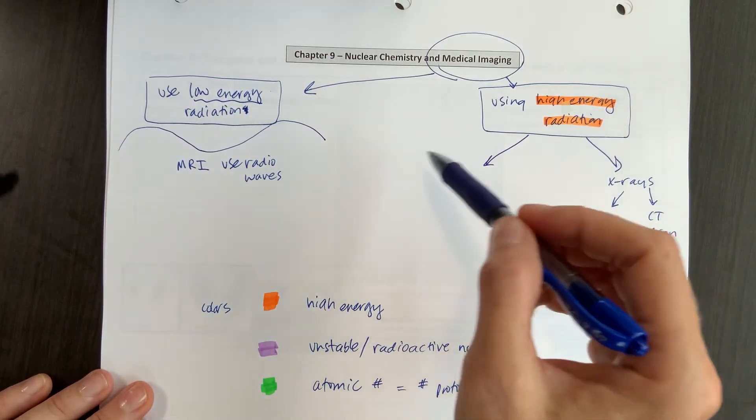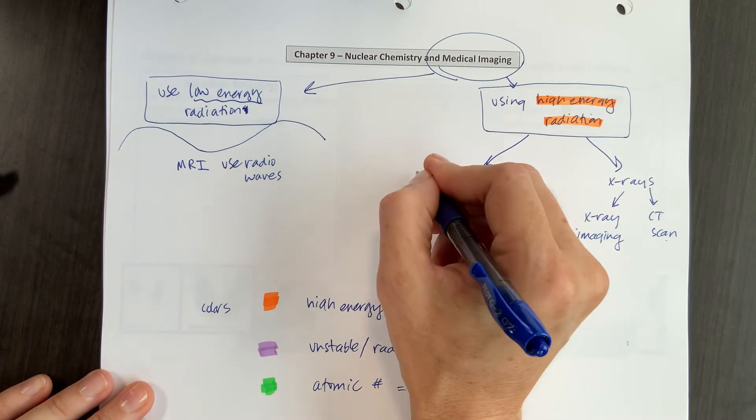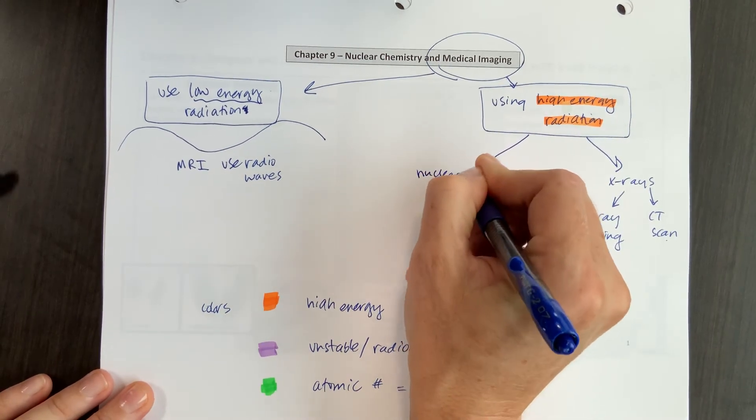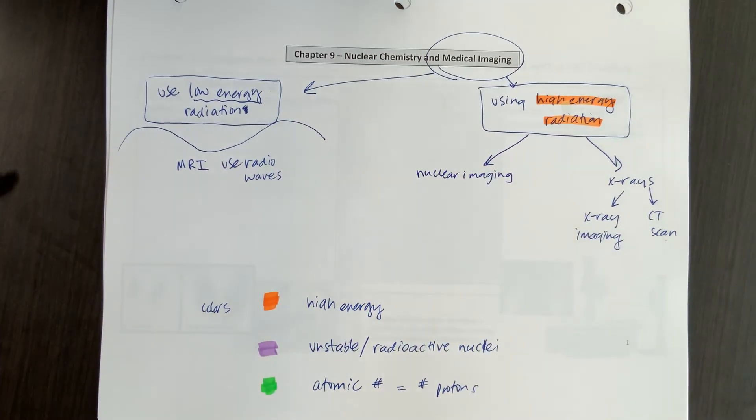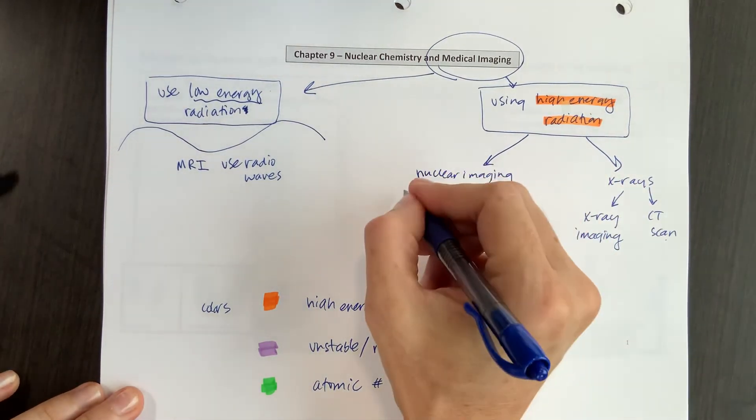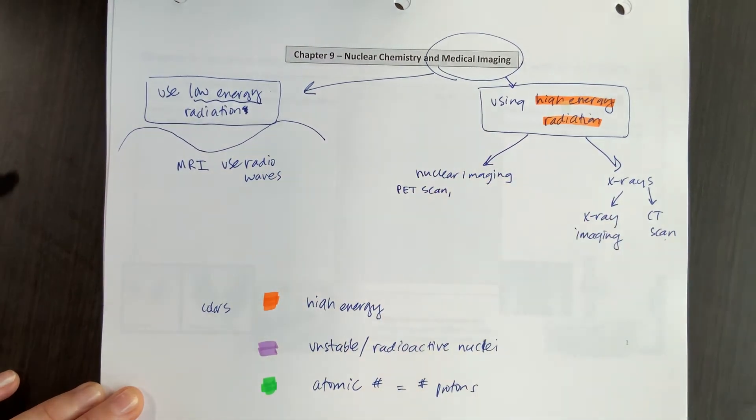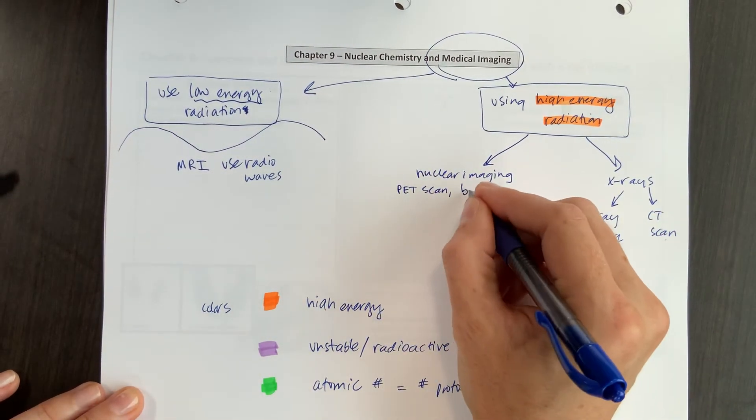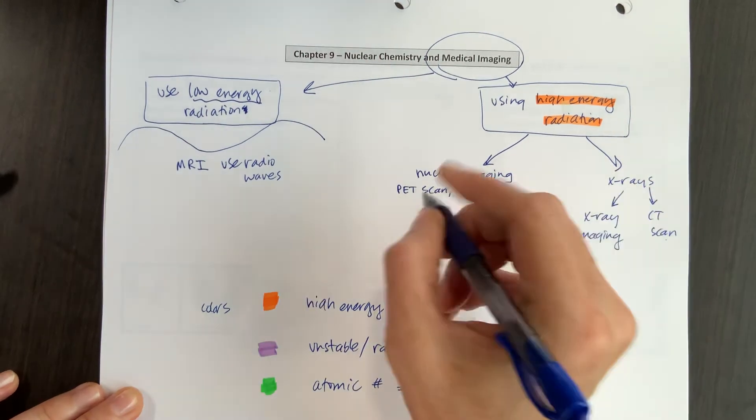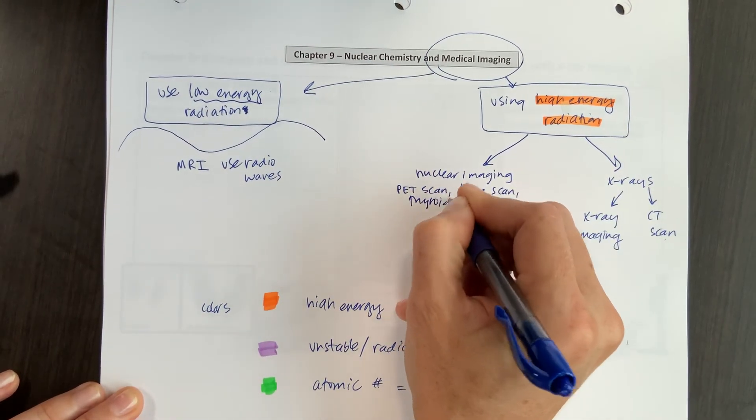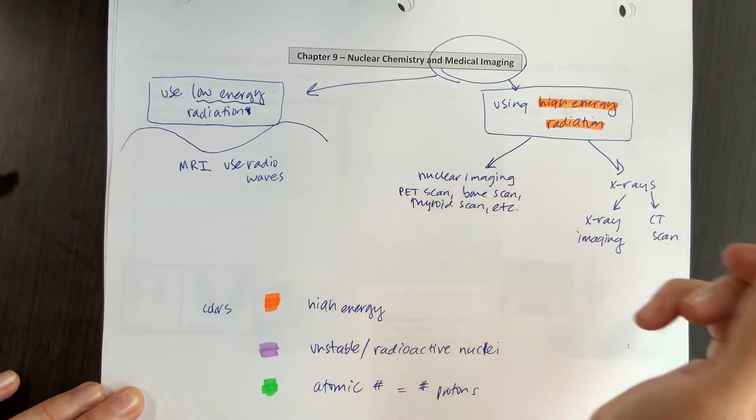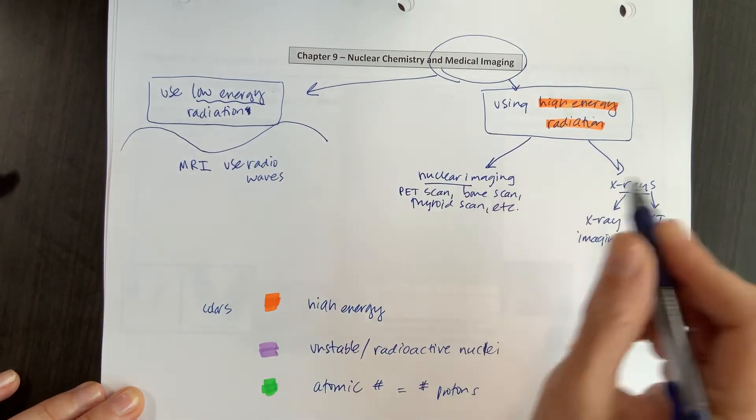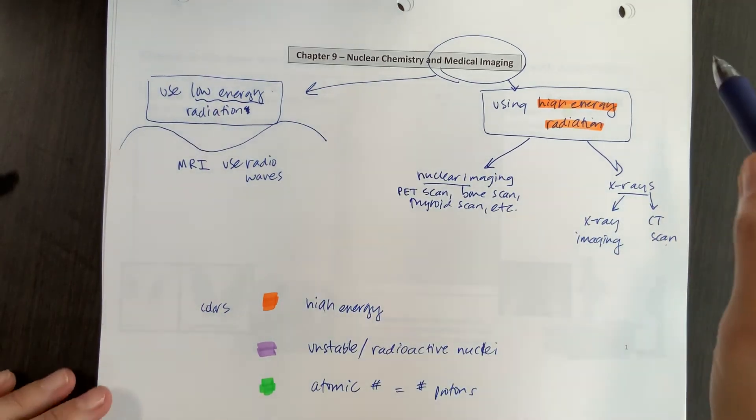We're going to spend the bulk of our time talking about another type of high energy radiation. And that is found in the nuclear imaging department at a hospital or an outpatient setting. And this would be procedures like a PET scan, or a bone scan, or the thyroid scan we saw last chapter, those sorts of things. So those are examples of nuclear imaging, which has high energy.